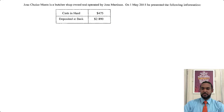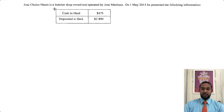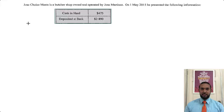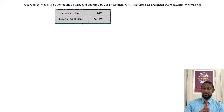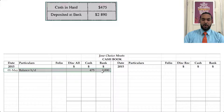So let's take a read. Jose Choice Meats is a butcher shop owned and operated by Jose Martinez. On 1 May 2015, he presented the following information. We have to do a cash book, and these are the opening balances. Both cash and bank are assets, and assets have debit balances at start. In the case of the bank, you can have an overdraft, which is a liability with a balance brought down on the credit side. But in this case, they did not indicate an overdraft, so we put both balances on the debit side.